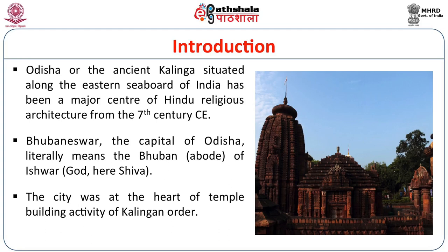Odisha, or the ancient Kalinga, was situated on the eastern seaboard of India and has been a major centre of Hindu religious architecture from the 7th century CE. Bhuvaneshwar, the capital of Odisha, literally means 'abode of Ishwar' — God, here Shiva. This region is also known as the Ikamra Kshetra because Shiva's Linga was found under a single mango tree — Ikamra.